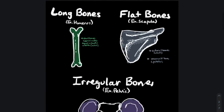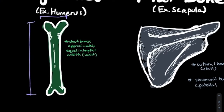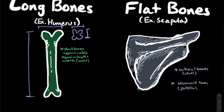Next we can talk about the different types of bones. First, we have long bones — bones that are a lot longer than they are wide. An offshoot of long bones are short bones, where the width is approximately the same as the length, commonly found in your wrists. Long bones are super important for hematopoiesis. Common MCAT examples include your humerus, femur, and tibia.